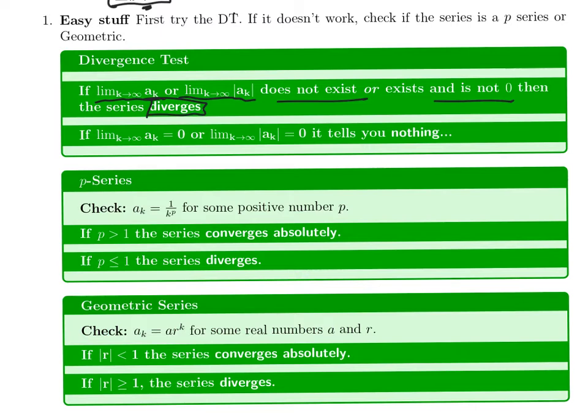However, if that limit, the terms or the absolute value equals zero, it tells you nothing. That's what's going to happen most of the time. In that case, if you're lucky, you may recognize it as a known series.